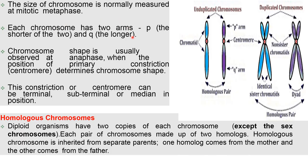The size of a chromosome is normally measured at mitotic metaphase and may be as short as 0.25 micrometers in fungi and birds, or as long as 30 micrometers in some plants like Trillium. Each chromosome has two arms: the shortest arms are called P and the longest arms are called Q. Chromosome shape is usually observed at anaphase, when the position of the primary constriction determines chromosome shape. These constrictions (centromeres) can be terminal, subterminal, or median in position.